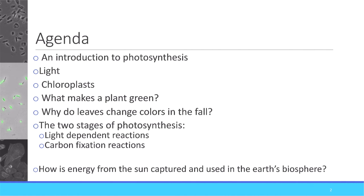We're going to talk about two fun questions: what makes a plant green, and why do leaves change colors in the fall. After that introduction, we will focus more in depth on the two stages of photosynthesis. Our overarching goal for this topic is to answer the question of how is energy from the sun captured and used in the earth's biosphere.